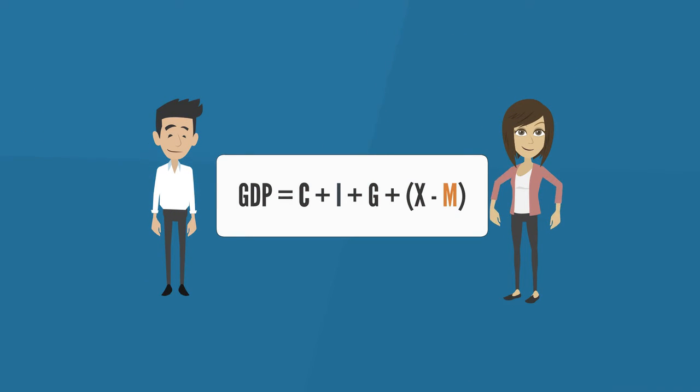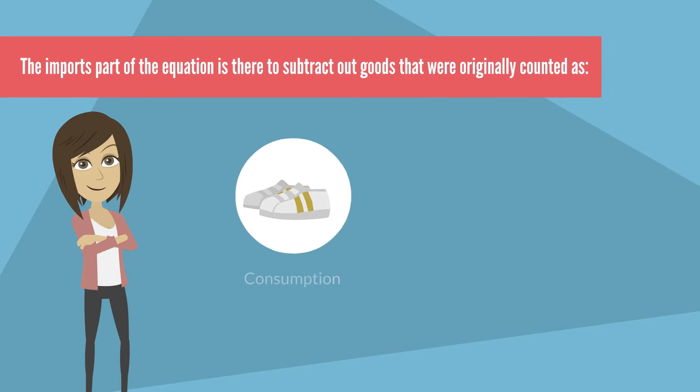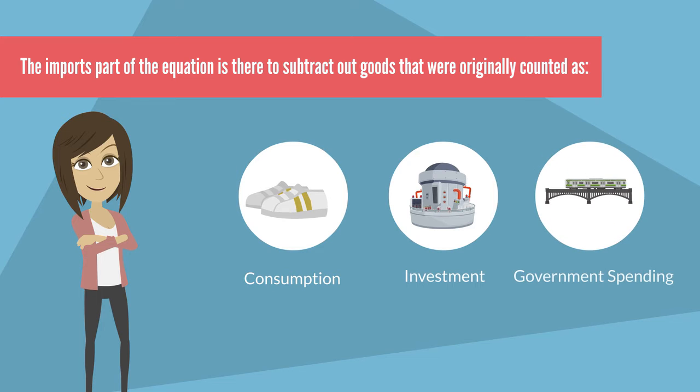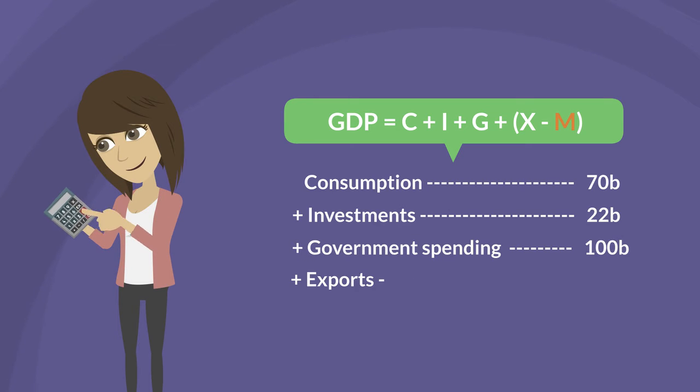It's important to realize that the M variable, imports, is there for accounting purposes. The imports part of the equation is there to subtract out goods that were originally counted as consumption, investment, or government spending but were imported. We subtract them to make sure we aren't including the value of imported goods in the GDP number.